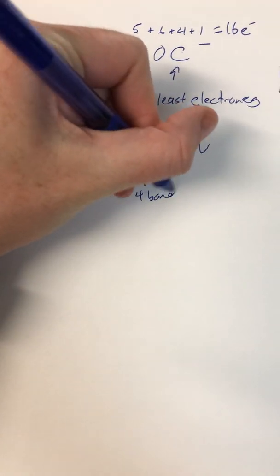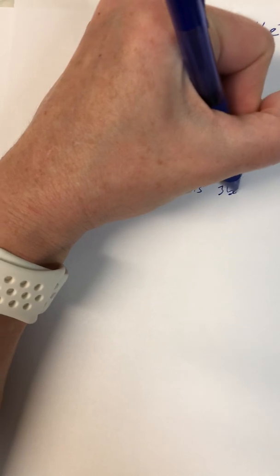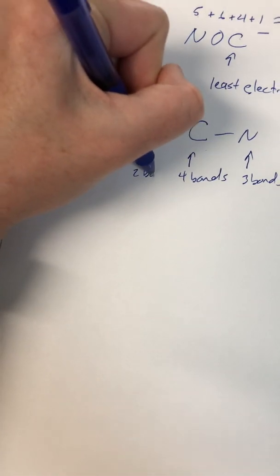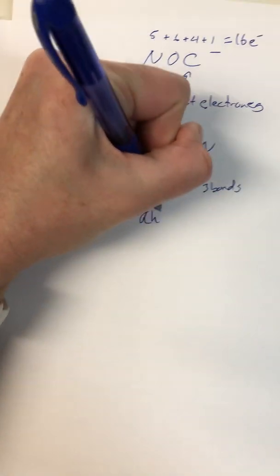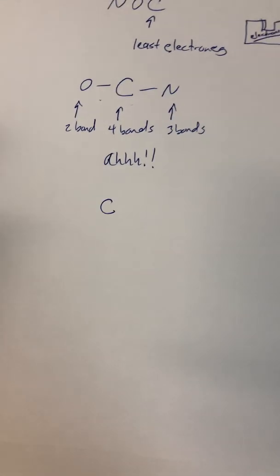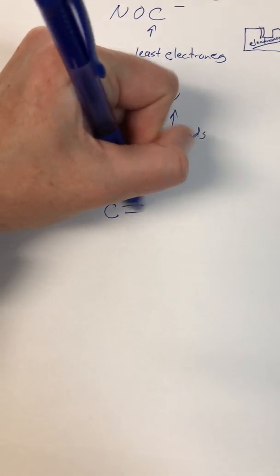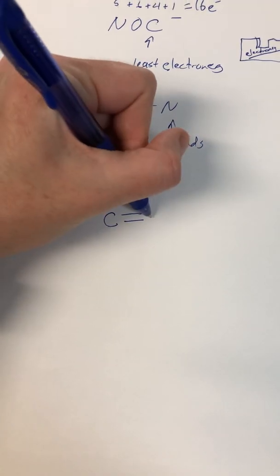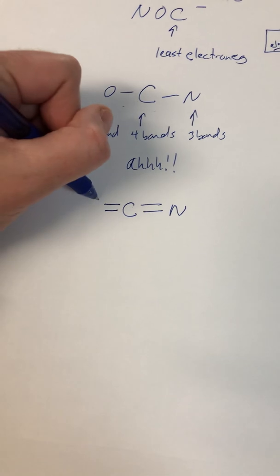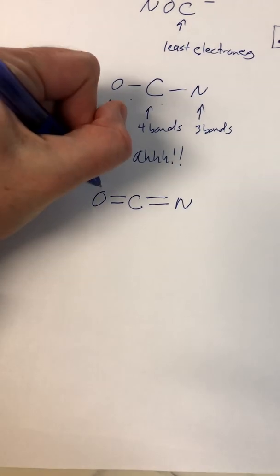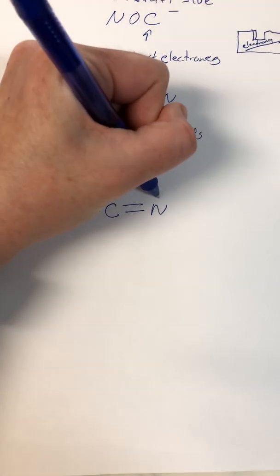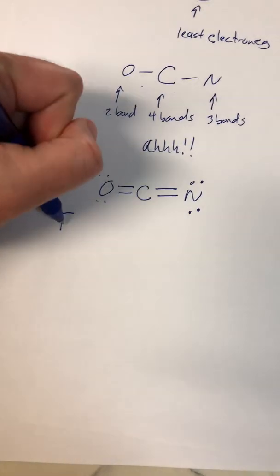So we go ahead and place them. We know carbon likes four bonds, nitrogen likes three bonds, and oxygen likes two bonds. But if we put three bonds here and two bonds here, carbon is not going to be happy. So let's go ahead and try something — pair carbon to nitrogen with two bonds here, two bonds here for carbon. Then place lone pairs so that each one has an octet, and then we'll calculate formal charge.